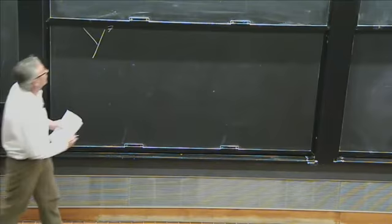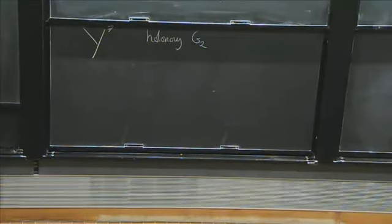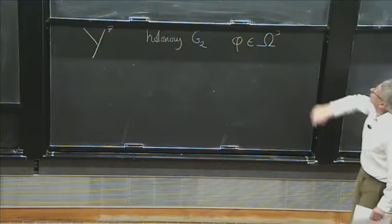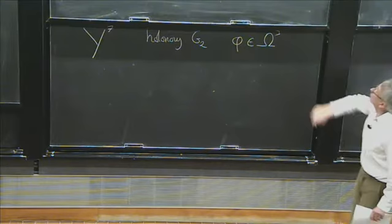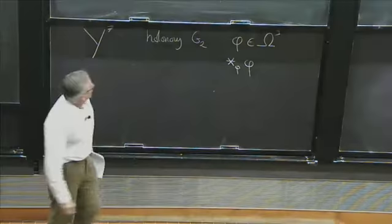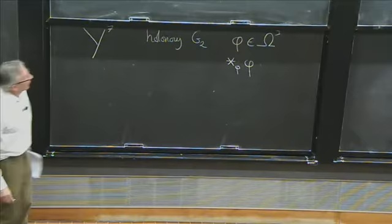We now move on to a seven-dimensional manifold and consider one which is a Riemannian manifold with holonomy G2. This structure can be defined in various ways — one would be in terms of having a parallel spinor — but in terms of forms, we say it's given by having a form phi which algebraically is positive at each point, and therefore defines a metric by this procedure. We also have a Hodge star phi, where the star is determined by this metric, and the condition of having holonomy G2 is equivalent to having such a form phi which is closed and also that the star phi is closed.